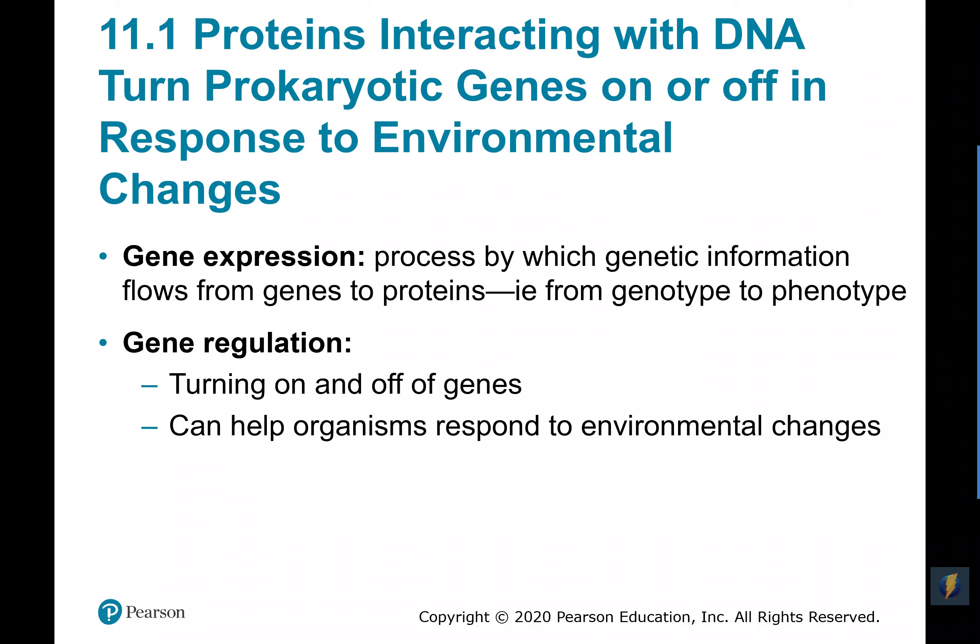Gene regulation is how we control gene expression. We turn some genes on, we turn some genes off. Some genes turn on or off at certain times, and in a controlled process, some genes turn on and off based on the environment around them. One of the ways living organisms adapt and respond to changes in their environment is by gene regulation — by changing which genes are expressed.